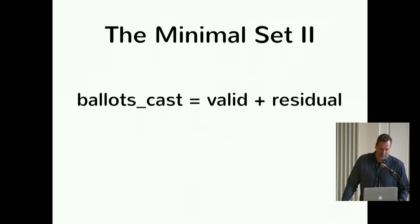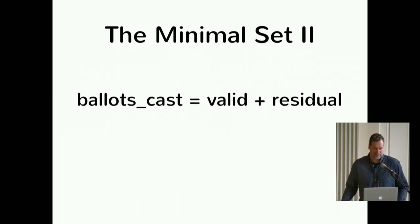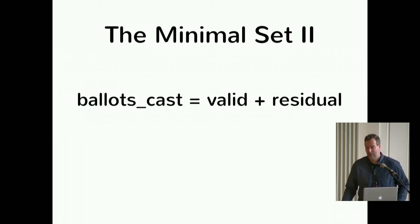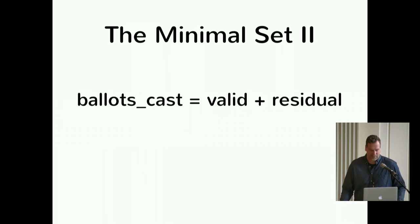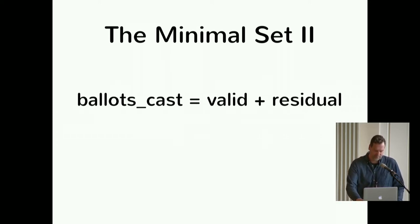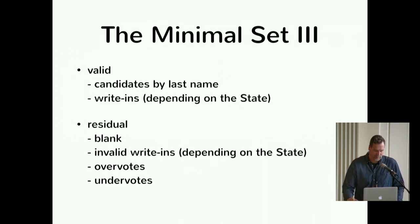The next thing that's really important, and gets overlooked a lot, is: ballots cast — you have valid votes and you have a residual vote. And the residual vote is all the invalid votes: blank votes, over votes, under votes, all that stuff. That's the residual vote.